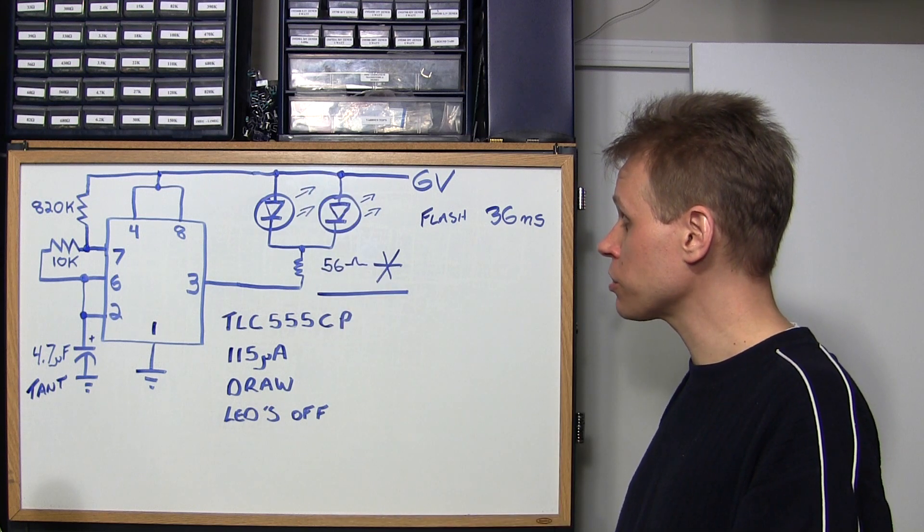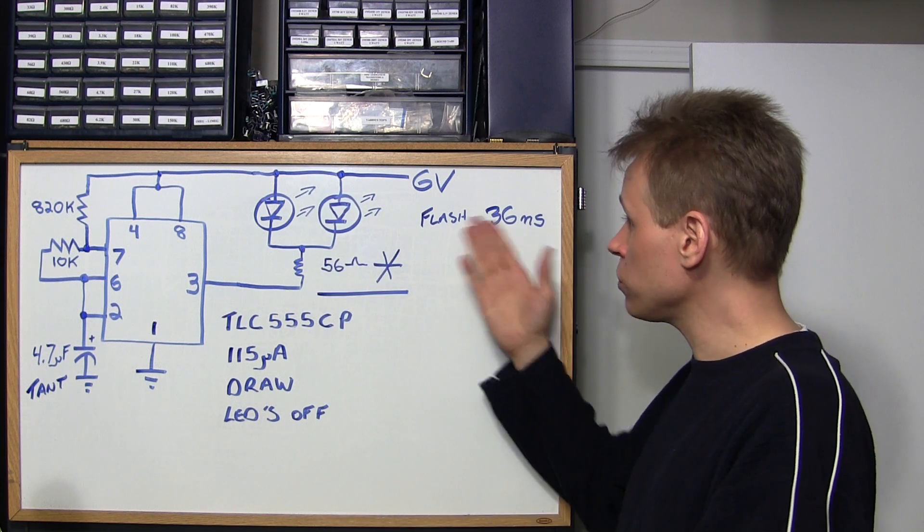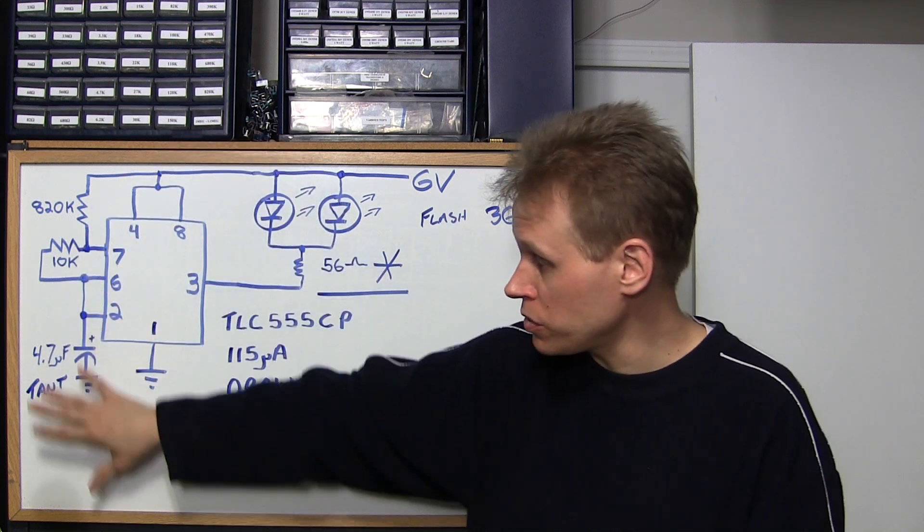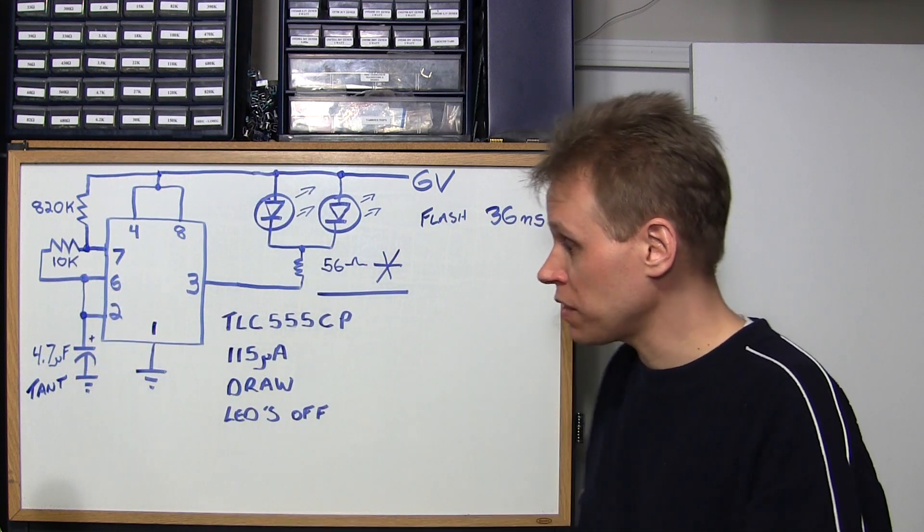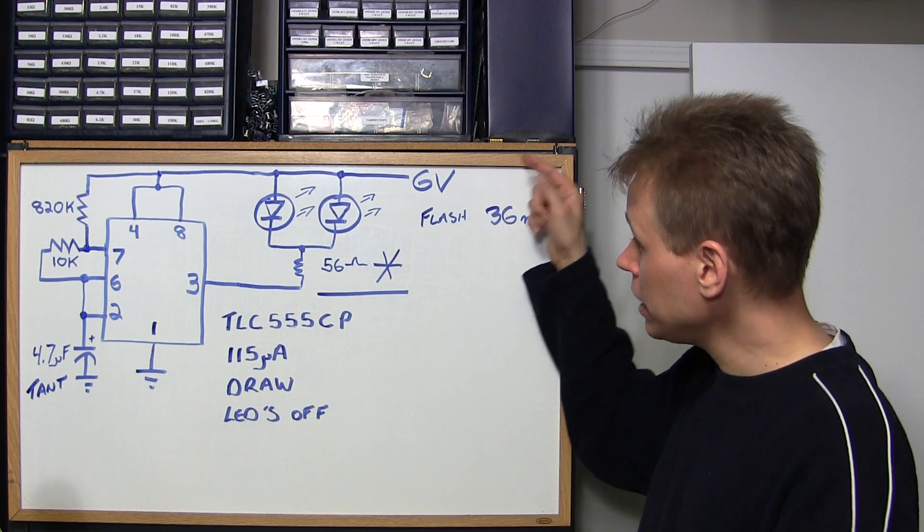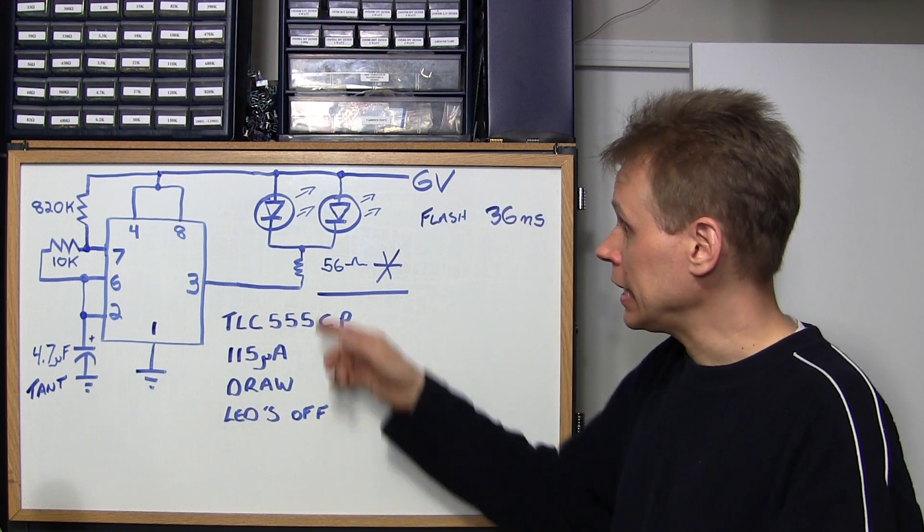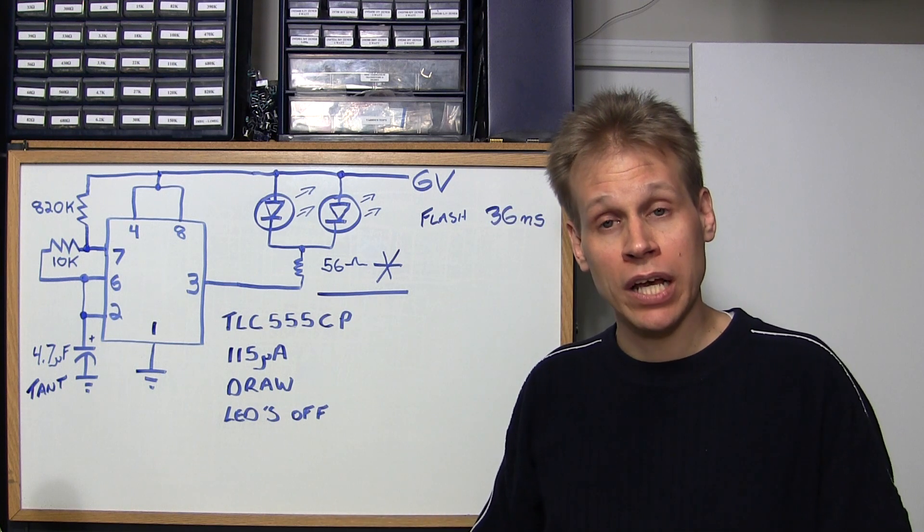And what you do is you would take this resistor here, up it to say 330 ohms, and use a high brightness red LED or something like that. The flash will still stay the same, all these values here will all stay the same, the 820k, 10k and 4.7 microfarad capacitor. You can feed this with 12 volts and you'll get a very very bright flash out of it.